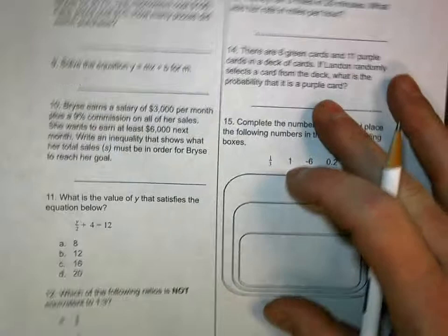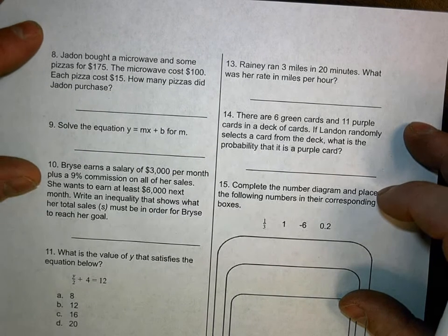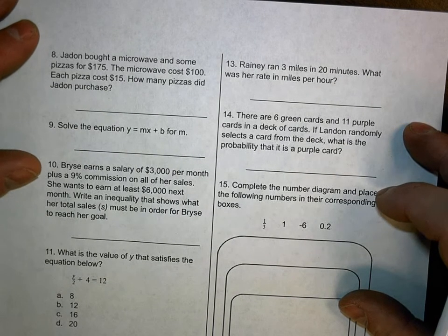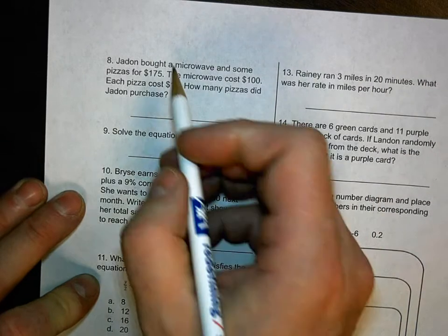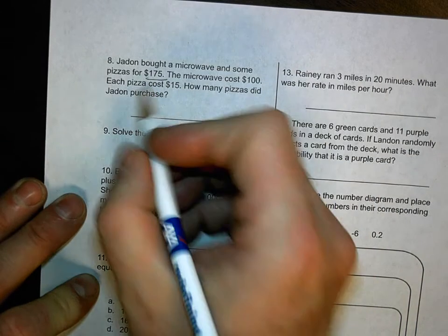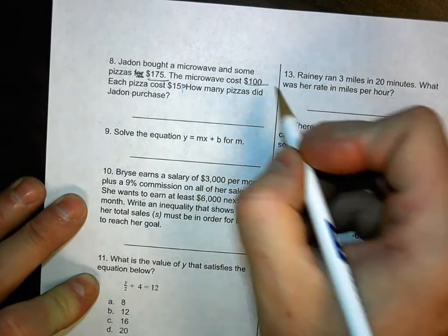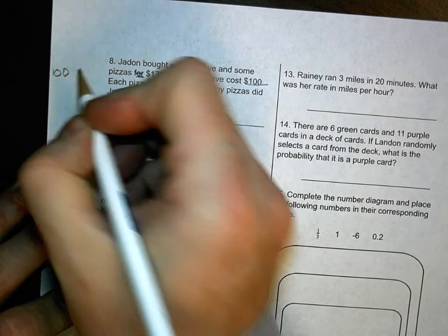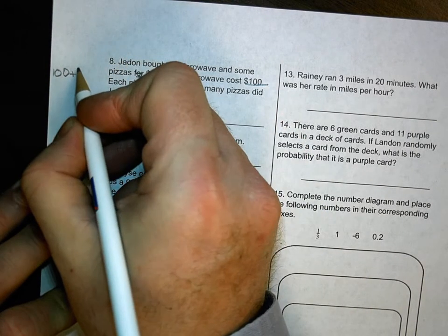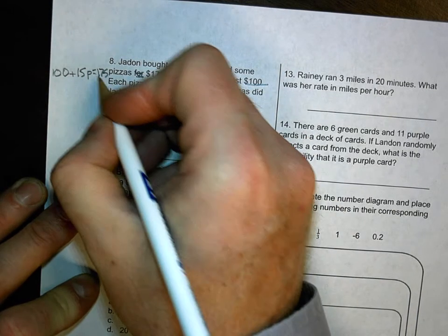All right. So looking at the back side. Jayden bought a microwave oven and some pizzas for $175. The microwave cost $100. Each pizza cost $15. How many pizzas did Jayden purchase? So this is a solve the problem. I'm going to use the side of the paper over here. Total spent was $175. That's your equal. Pizzas cost $15. That's 15 times a pizza. The microwave cost $100. It's a flat fee. So $100 plus the cost of the pizzas, plus 15p, equals $175. I draw my line straight down.